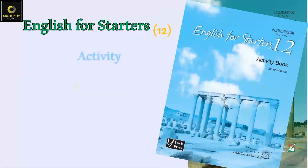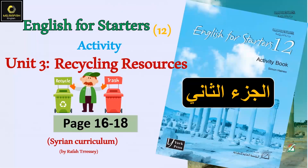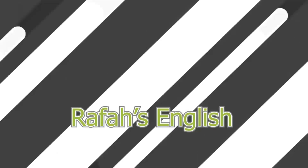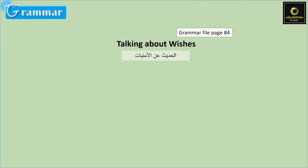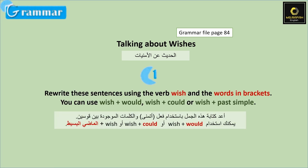Hello everyone and welcome to the activity of the third unit: Recycling Resources. I'm Mr. Fan and we will be working together. Are you ready? Let's get started talking about wishes. We have already talked about the rules. Rewrite these sentences using the verb wish and the words in brackets. You can use wish with would, wish with could, or wish with the past simple.